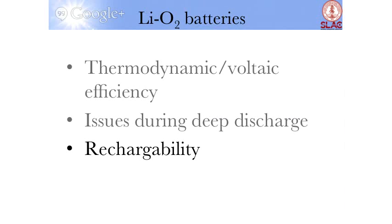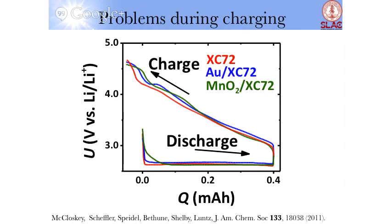I started off telling you that everything is great about this chemistry. The electric chemistry is fantastic — you can discharge and charge at very low overpotentials. If that were true, you would essentially have a box curve: discharge running flat and charging running flat. But that's not what is observed. You actually have this rising tail, and so we want to try and understand why exactly this is happening.